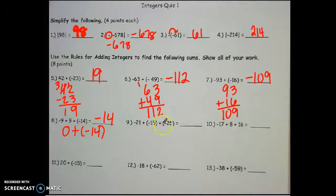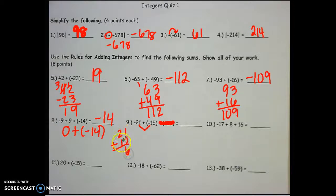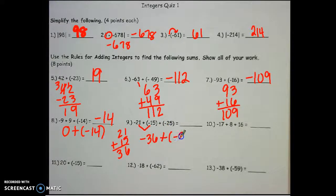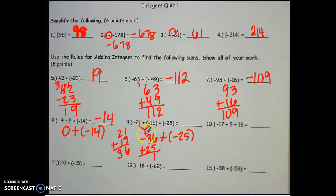For number 9, forget about negative 25 at the end, and just add 21 plus 15 because the signs are the same. 1 plus 5 is 6, 2 plus 1 is 3 — keep your sign. Then bring down plus negative 25. My signs are the same, so I'm adding: 6 plus 5 is 11, 3 plus 1 is 4, plus 2 is 6. They're both negative, so it's negative 61.